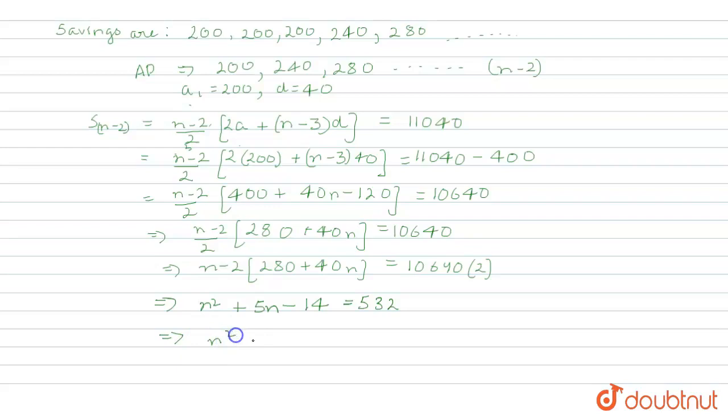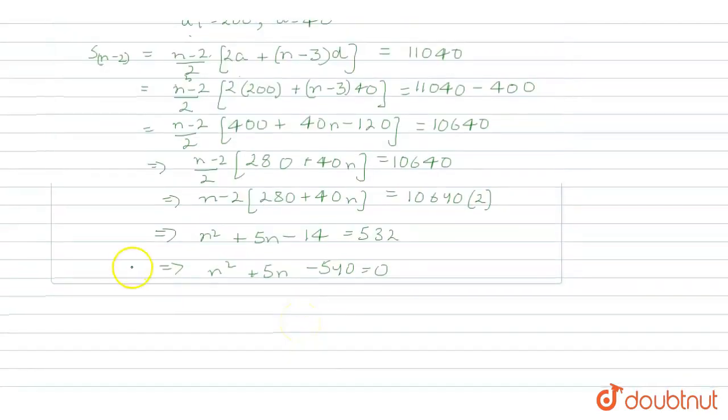After simplifying it more, it will come as n² + 5n - 540 equals 0.